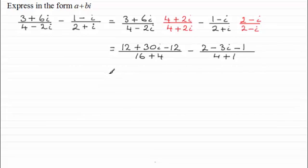And now if we just tidy this up a bit further, the 12 minus 12 cancels one another out and that just leaves us with 30i and that's over 16 plus 4 which is 20. And for this last fraction we've got minus, and then we've got 2 minus 1 which is 1, and then minus 3i, and that is all over 5.